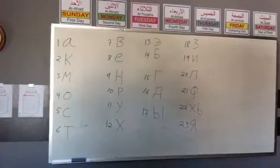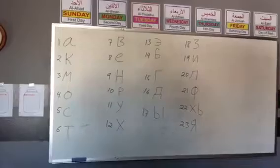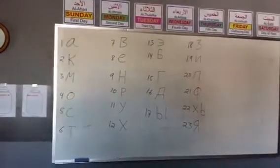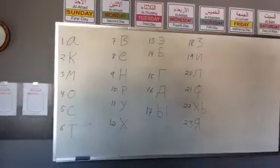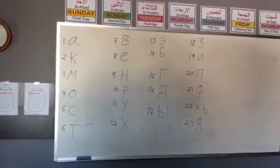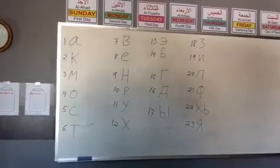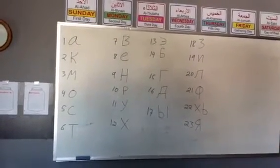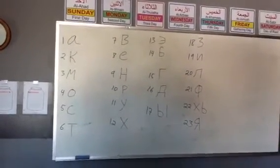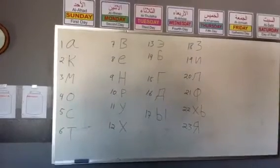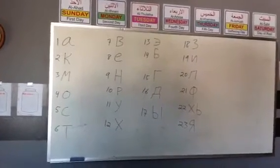Again, very quickly, starting with number 1: a, kuh, m, o, s, t, v, y, n, r, u, sh.